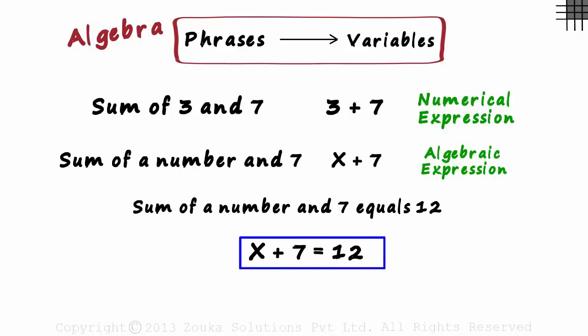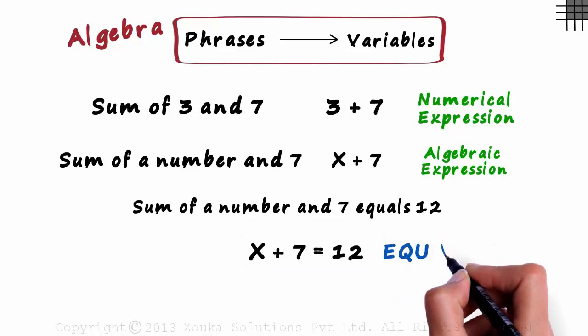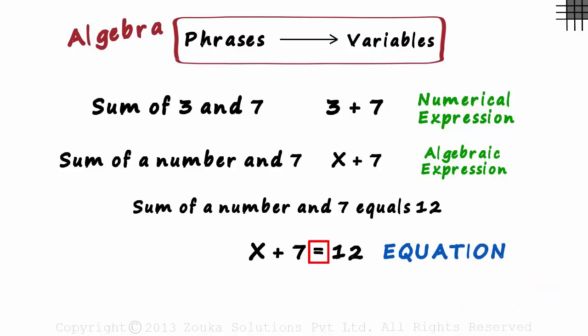We wrote this phrase as x plus 7 equals 12. Is this an expression? No, that's not the case. This is called an equation since it has an equal to sign. It's called so because we are equating two sides: the left hand side and the right hand side.